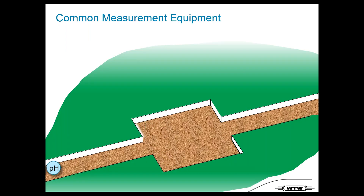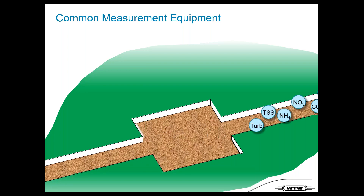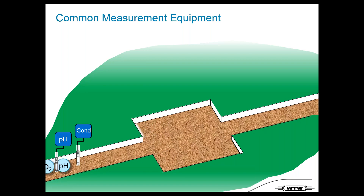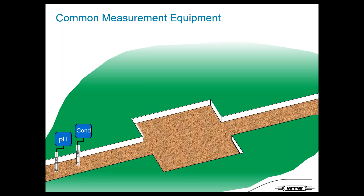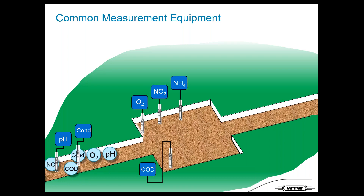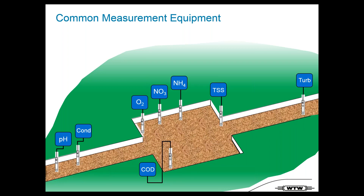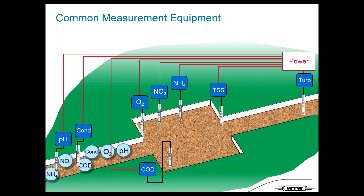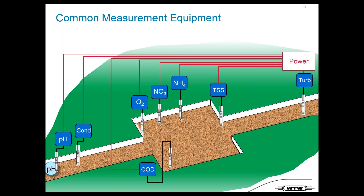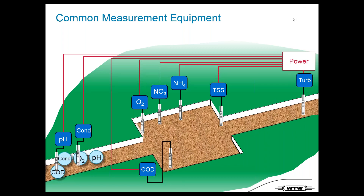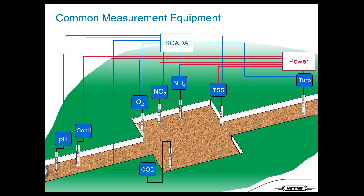When I look at the past, common measurement equipment meant having specialized transmitters and sensors for every location. You always needed one transmitter, one sensor, different technologies, and power everywhere — which is a lot of work — and you also needed a connection to the SCADA system at every point.